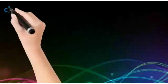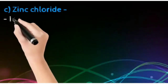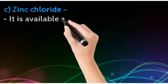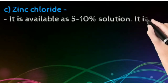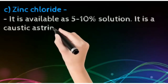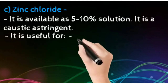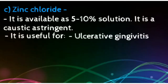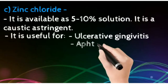Then, we talk about zinc chloride. It is available as 5-10% solution. It is a caustic astringent. It is useful for any ulcerative gingivitis, or periodontal pockets, and aphthous ulcers also.